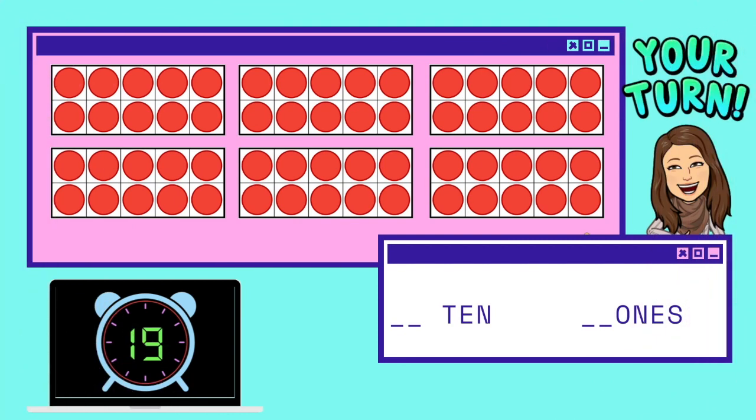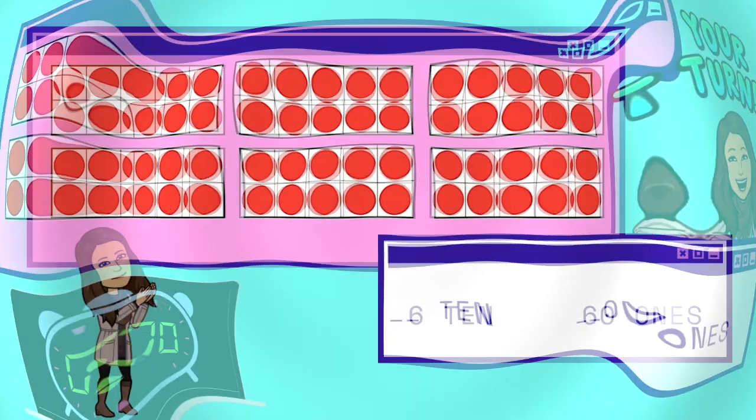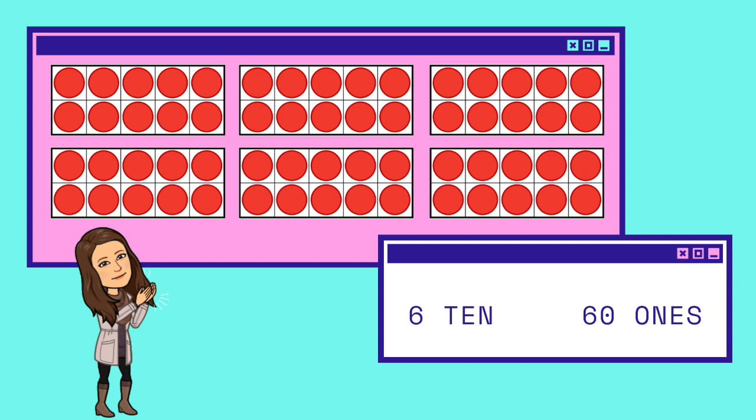Now it's your turn. How many 10s are in this picture? How many 1s? There are 6 groups of 10 and 60 1s.